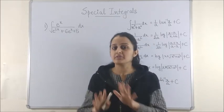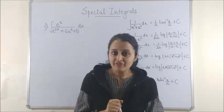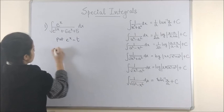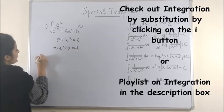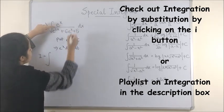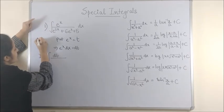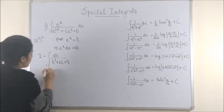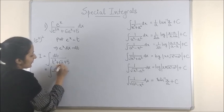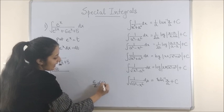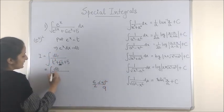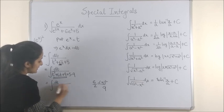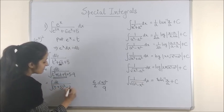By looking at the very first question, it no way resembles any of these forms. However, if you have done integration by substitution, you know the moment I put e raised to power x as t, this gives us e raised to power x dx is dt. So the integral changes — this part changes to dt upon e raised to power 2x, which is the same as e raised to power x squared. That makes it t squared plus 6t plus 5. We can complete the square: take 6, take its half — that's 3 — and add and subtract its square. So I'll be adding and subtracting 9. Taking the first three terms, this becomes t plus 3 whole square, and this one gives us minus 2 squared.